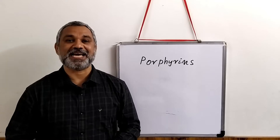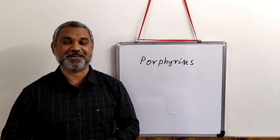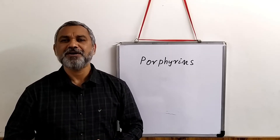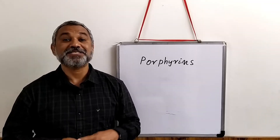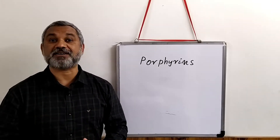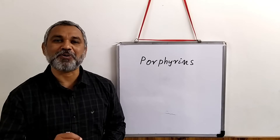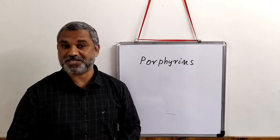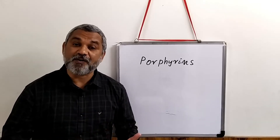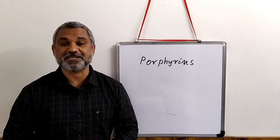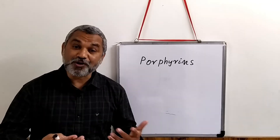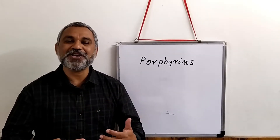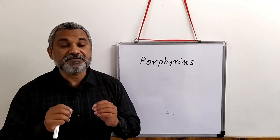This video covers the chemistry and structure of porphyrin. Porphyrin is a cyclic compound derived from pyrrole, and it plays a very crucial role in supporting life. Heme-containing porphyrins are involved in oxygen transportation; magnesium-containing porphyrins are involved in photosynthesis as chlorophyll; phycobilins are another form of porphyrins; and a fourth form is found in the cobalamins, which you find in vitamin B12.